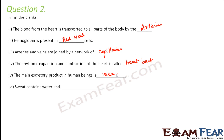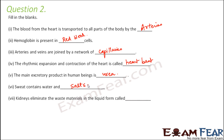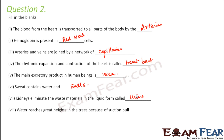Sweat contains water and salts — you can test the presence of salts in sweat because during summer, when you sweat too much, white patches appear on dark colored clothes. Kidneys eliminate waste materials in liquid form called urine, which is the main product excreted from our body. Water reaches great heights in trees because of suction pull caused by transpiration — the leaves lose water and pull up water from below, creating a net upward transpiration pull.